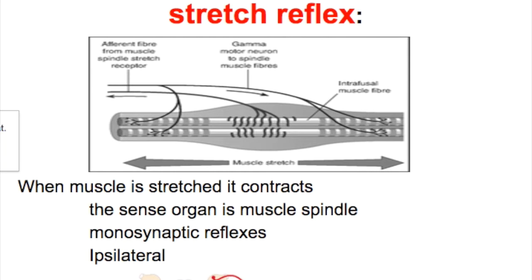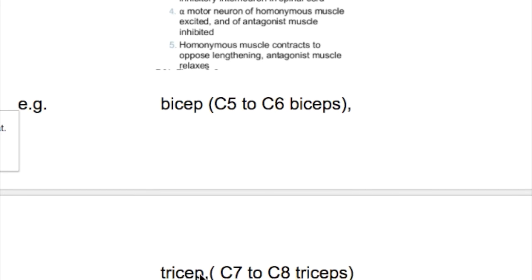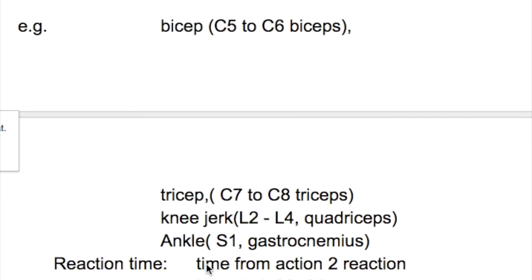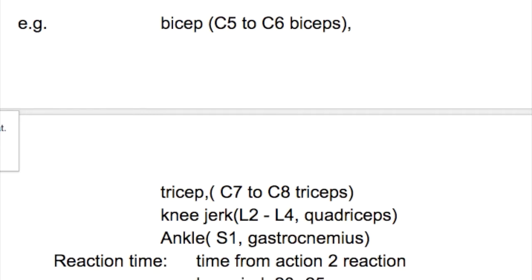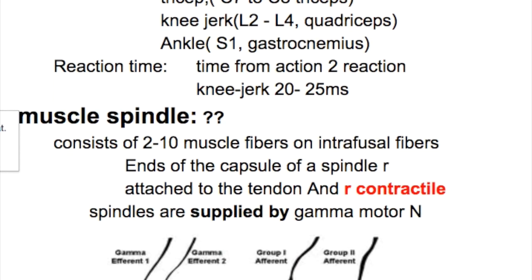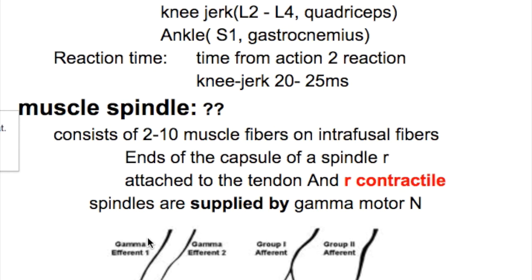Examples of stretch reflexes: bicep reflex C5 and C6, triceps C7 and C8, knee jerk L2, L3, and L4 in which the quadriceps is contracted, and ankle jerk S1 where the gastrocnemius is contracted. The reaction time — time taken from action to reaction in the case of knee jerk — is 20 to 25 milliseconds.